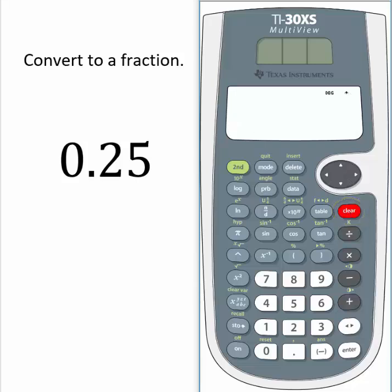We are going to use a secondary function to convert the decimal 0.25 to a fraction. First, find the table button, but don't select it. The table button is located below the directional pad to the left side of the clear button.